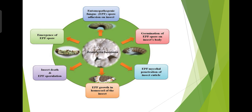You can see the steps in the picture. First the entomopathogenic fungus spore adheres to the insect, then germination of the spore on the insect's body takes place. The mycelia then penetrate into the cuticle of the insect, and fungal growth is seen inside the haemocoel. The insect then dies and fungal sporulation takes place, with spores emerging out.